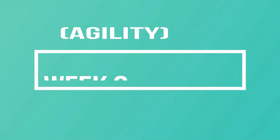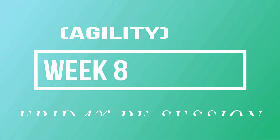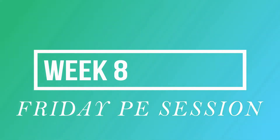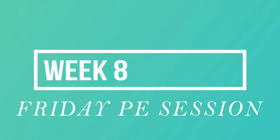For PE today, we are going to do all agility exercises four times, which means you are going to go across to the opposite cone and repeat the same exercise again.